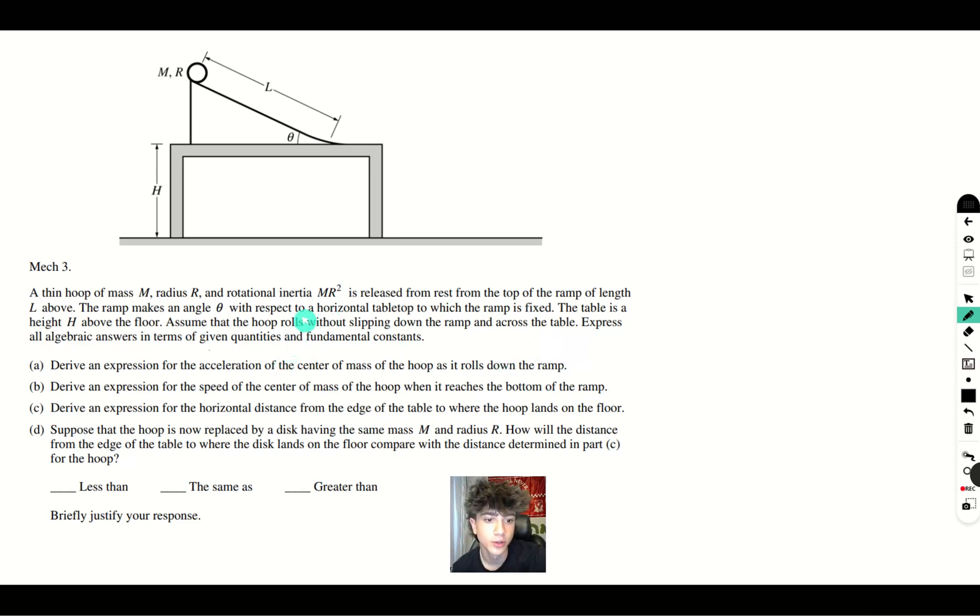A thin hoop of mass M, radius R, and rotational inertia MR squared is released from rest from the top of a ramp of length L above. The hoop makes an angle theta with respect to a horizontal tabletop to which the ramp is fixed. The table is a height h above the floor.